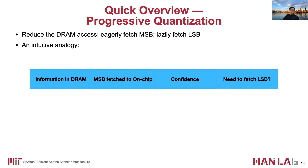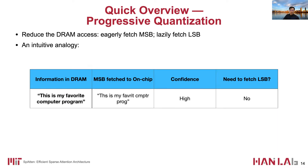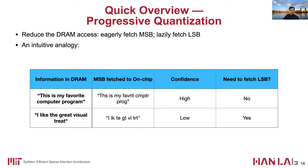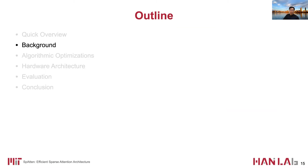We also propose progressive quantization. The core idea is to reduce DRAM access by eagerly fetching MSBs and lazily fetching LSBs. The full information is in the DRAM and we only fetch part of the information to entry buffers. If the confidence about the output is high, then we do not need to fetch LSBs. Otherwise, if confidence is low — meaning the information is not enough to get meaningful results — then we need to fetch LSBs. That's the quick overview.